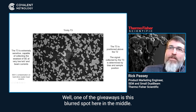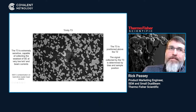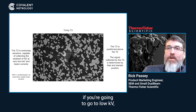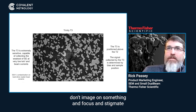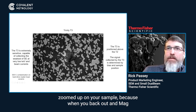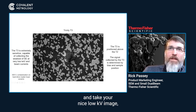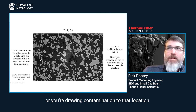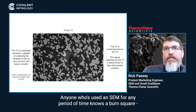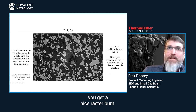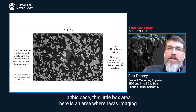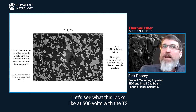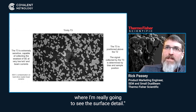How do I know this is the surface? One of the giveaways is this blurred spot here in the middle. Unfortunately, one of the things you have to think about when trying all these different settings is: if you're going to go to low KV, don't image on something and focus and stigmate zoomed up on your sample, because when you back out in mag and take your nice low KV image, you're going to see the beam damage you've created — whether it's charge buildup or contamination drawn to that location. Anyone who's used an SEM for any period of time knows what a burn square is. You get a nice raster burn, and in this case this little box area here is where I was imaging at higher KV, not thinking about what it would look like at 500 volts with the T3 where I'm really going to see the surface detail.